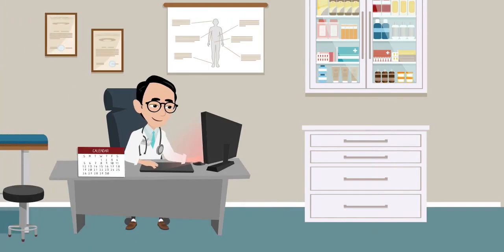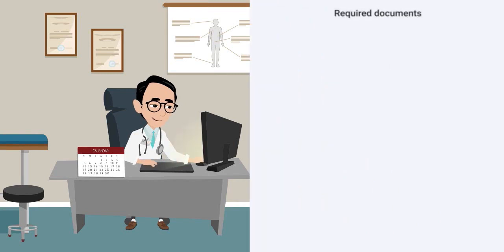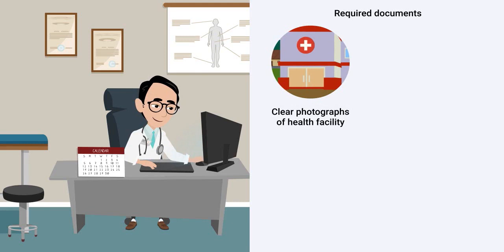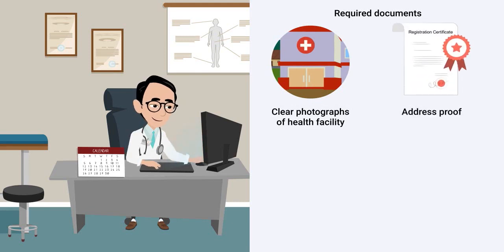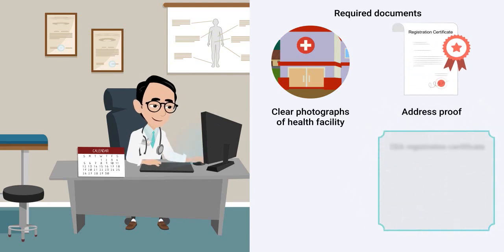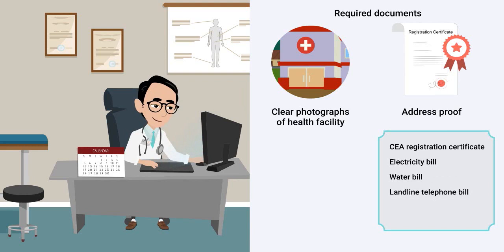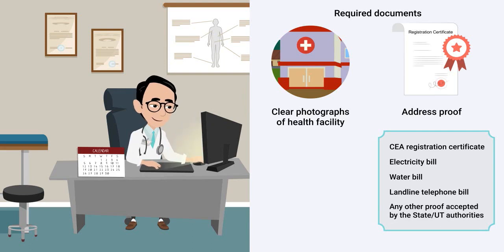Before starting the HFR registration process, please keep the required documents handy: clear photographs of your health facility including building and board photographs; address proof. For private and public-private partnership facilities, address proof may include CEA Registration Certificate, Electricity Bill, Water Bill, Landline Telephone Bill, Rent Agreement, Title Deed, Property or Land Record, or any other proof accepted by the respective state or union territory authorities.